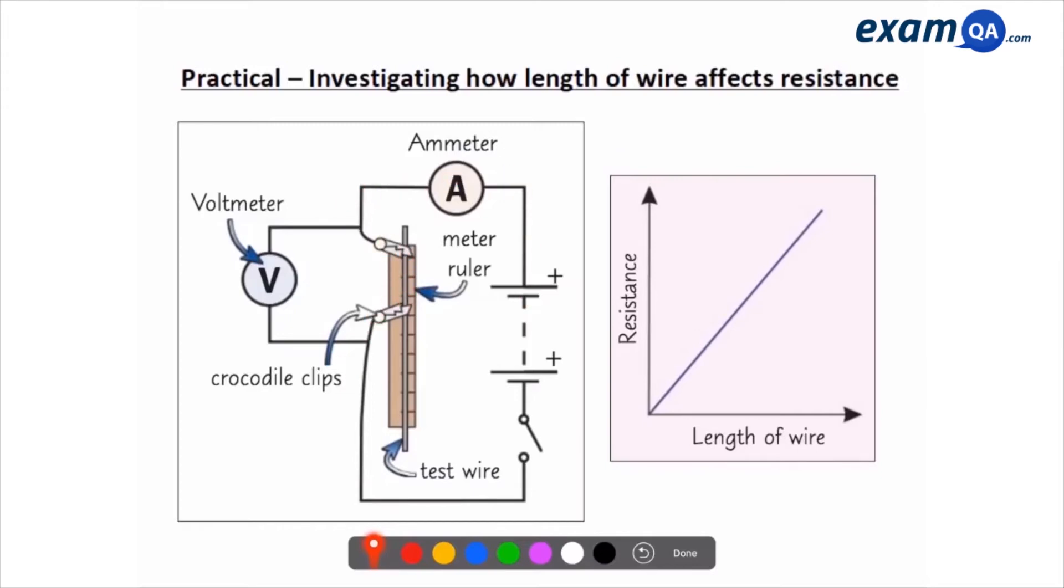OK, so what we're going to do first is we're going to put the crocodile clips right next to each other. So what we're going to do in the whole experiment, keep one stationary and move the other one backwards. And by moving this guy backwards, what we're going to be doing is we're going to be increasing the distance that the electrons will have to flow. And of course, we have a ruler here so we can measure how long we've increased the distance for.